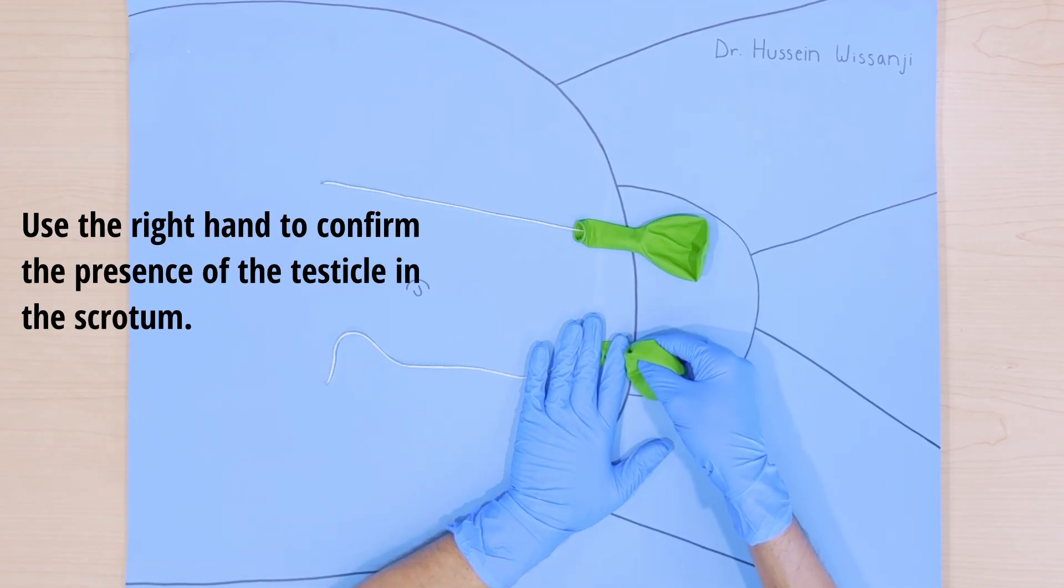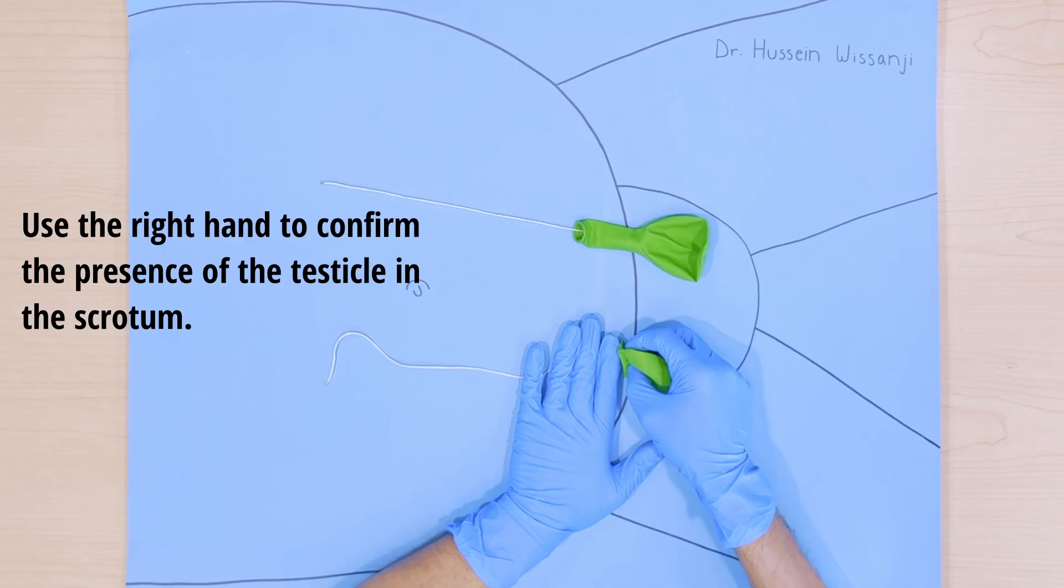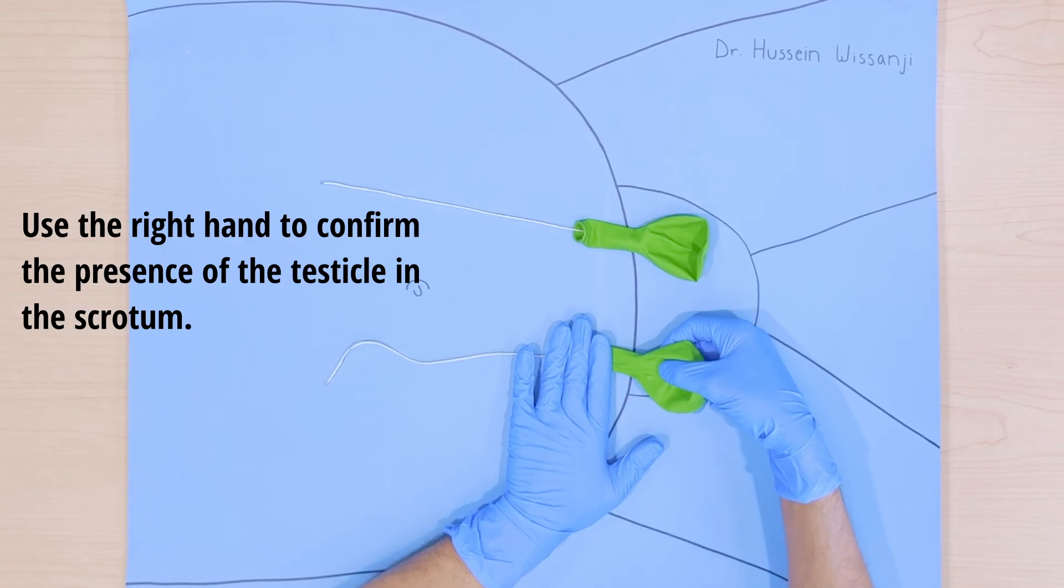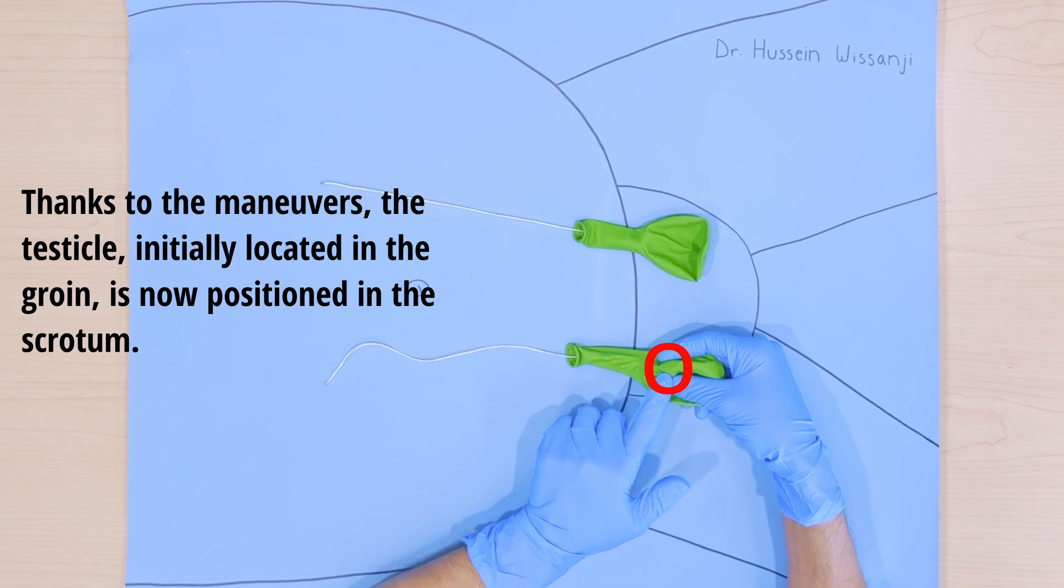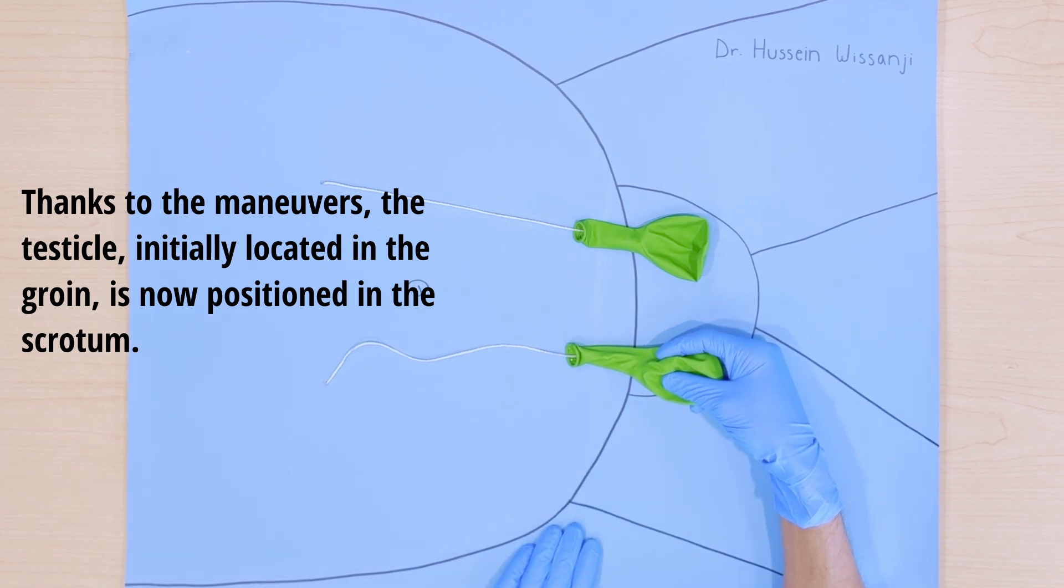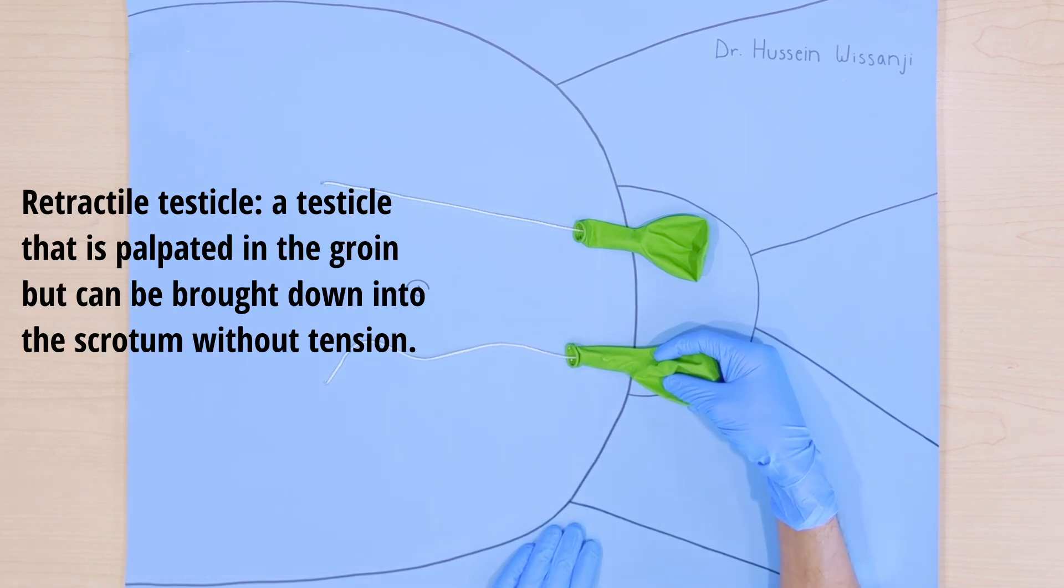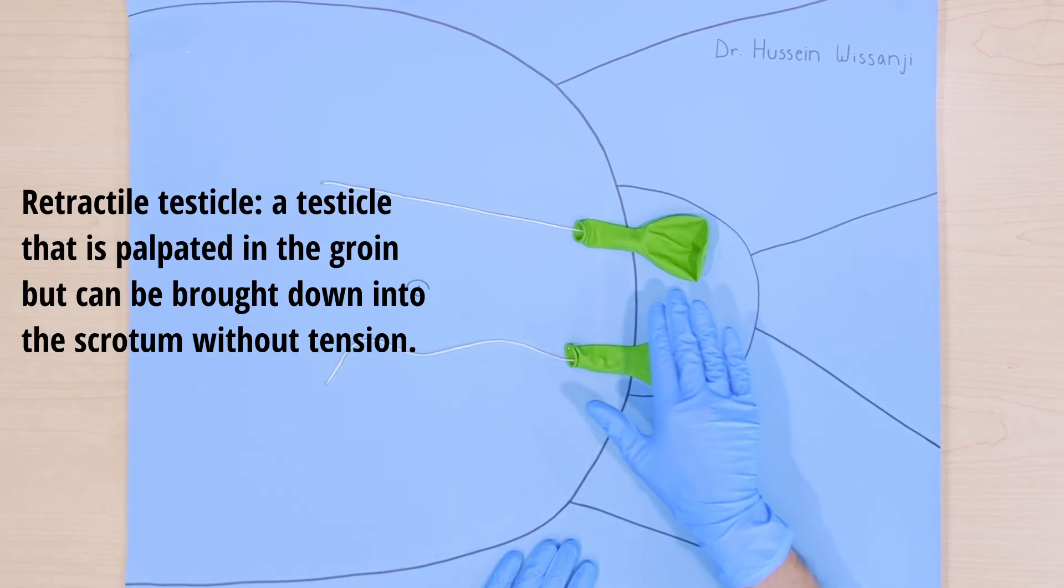Now with your right hand, you can try to palpate and locate the testicle. Now I was able to bring the testicle from the inguinal region to the scrotum and the next question will be, is there any tension on the testicle while it's in the scrotum? A retractile testicle won't have any undue tension on its spermatic cord when you're pulling the testicle into the scrotum.